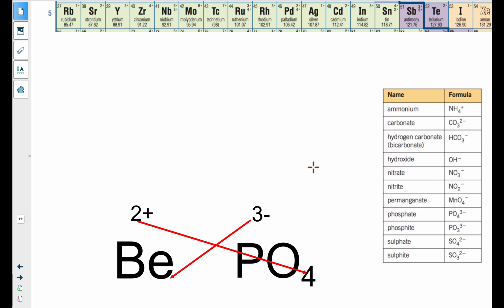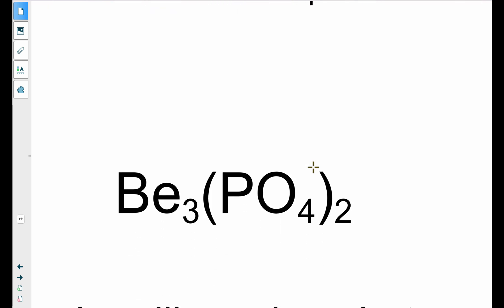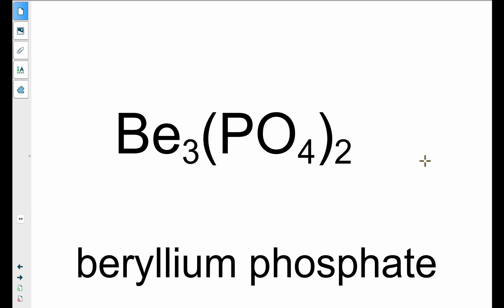Now when we go to write this out, we need to be careful. So we need to write this properly, which is 3 berylliums, 2 phosphates. So you need to put brackets or parentheses around the phosphate to show that I have 2 phosphates. And the combination of beryllium and phosphate will make beryllium phosphate.